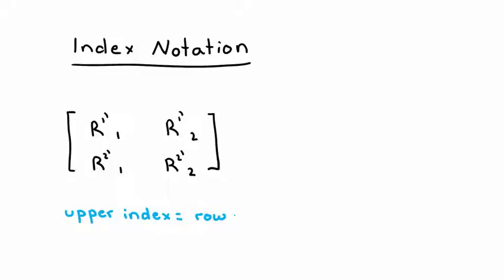The upper index tells us which row the element belongs in. In other words, an upper index of 1 tells us the element belongs in row 1, and an upper index of 2 tells us the element belongs in row 2.